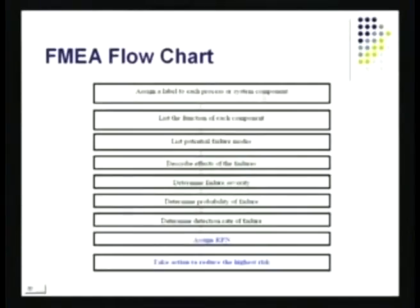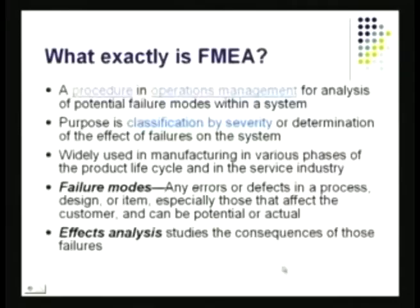These turn out to be high-return projects with good ROIs. The flowchart of what we went through: assign a level to each process or system component — the paint tub; list the function of each component — fill the tub; list potential failure modes; describe the effect and severity of the failure — spill on the floor; determine the probability of failure; assess the detection rate; calculate the RPN; then take action to reduce the highest risk.